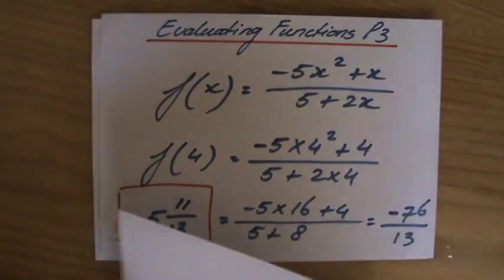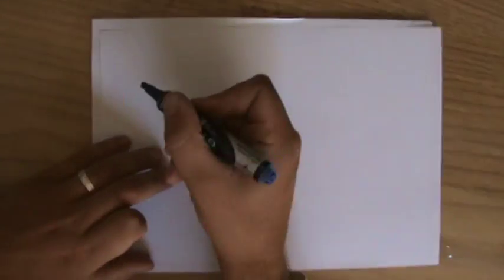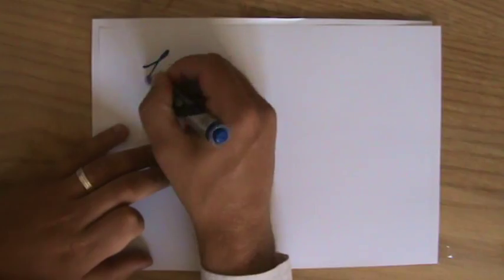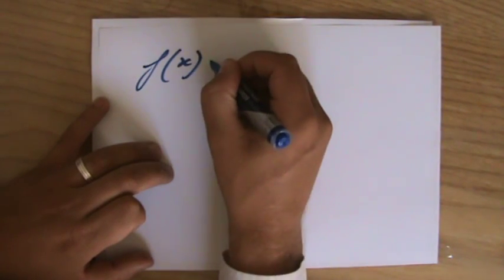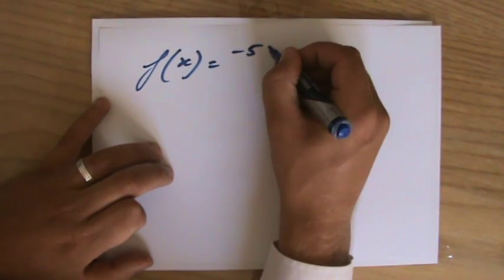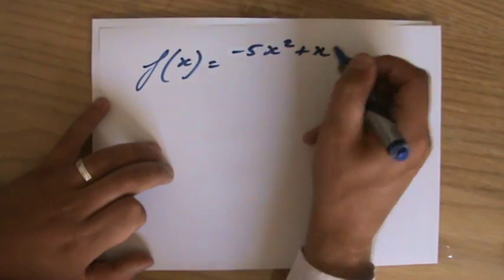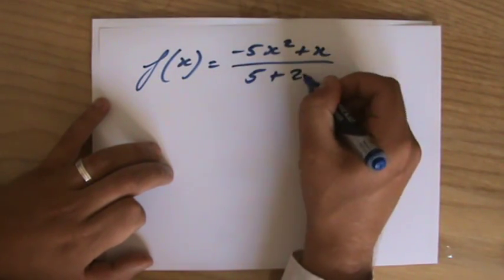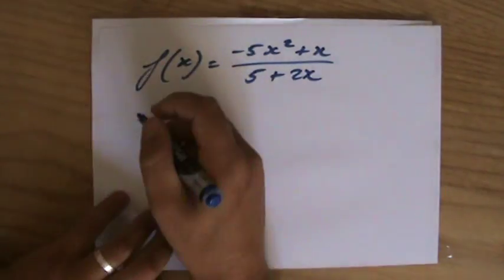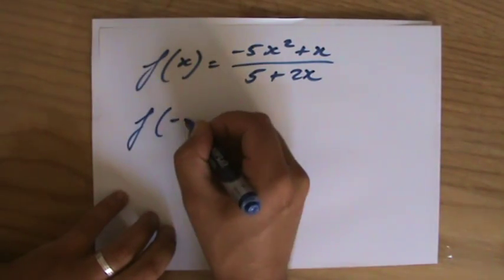Now, I know I'm talking too much, but I want to do the same function again, but now for a negative number. I'm going to do it a little bit quick. f(x) equals, let me write down the function, minus 5x squared plus x, and 5 plus 2x. Now, let's say we have to do it for minus 2.